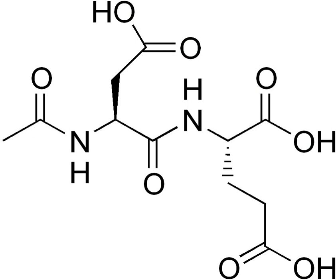NAAG is catabolized via NAAG peptidase activity. Two enzymes with NAAG peptidase activity have been cloned: glutamate carboxypeptidase 2 and glutamate carboxypeptidase 3. These enzymes mediate the hydrolysis of NAAG to NAA and glutamate. Their inhibition can produce therapeutic benefits. Two main types of inhibitors are known: compounds related to 2-phosphonomethyl pentanedioic acid (2-PMPA), and urea-based analogs of NAAG, including ZJ43, ZJ17, and ZJ11.